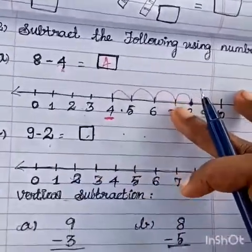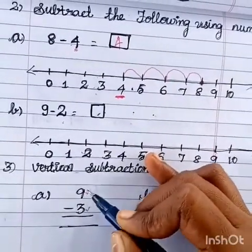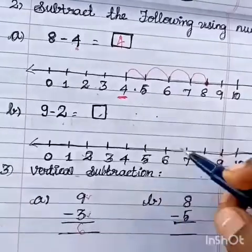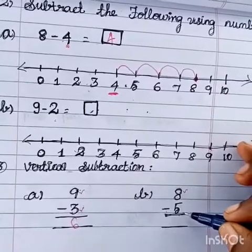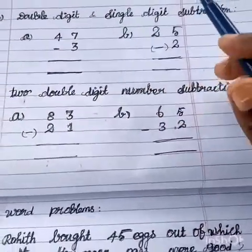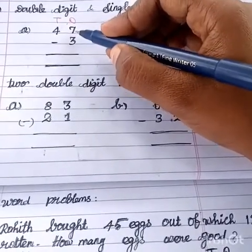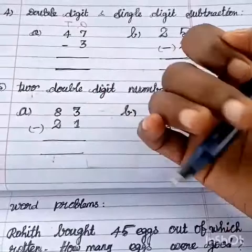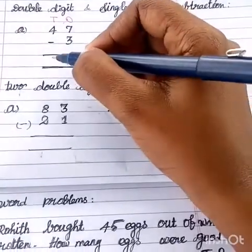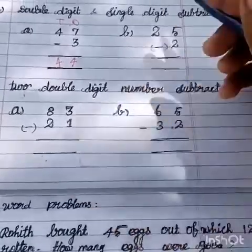Then third question, vertical subtraction. So 9 in the mind take 3 fingers, 9 before 8, 7, 6. So the answer is 6. Then B question, 8 minus 5. So 8 in the mind take 5 fingers before you do it subtraction.